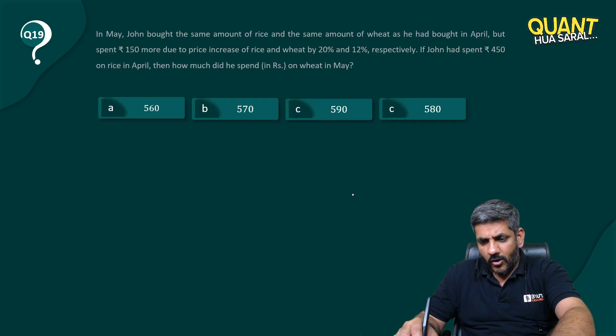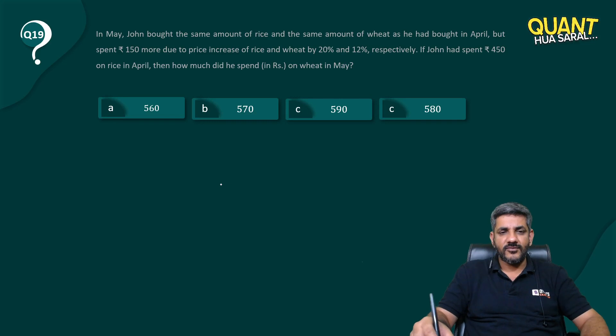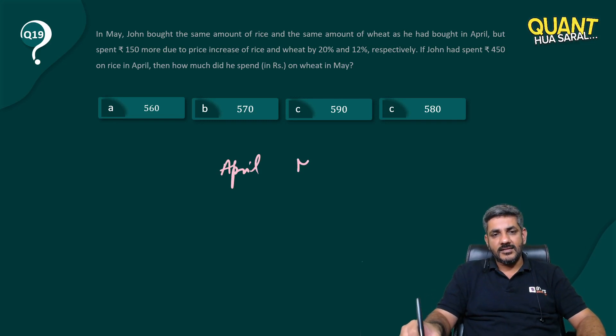Honestly, I did this question within 15-20 seconds. I'll tell you the reason for that. When he says that April and May are the two months and you are purchasing rice and wheat in them,